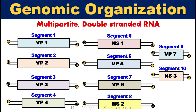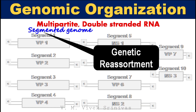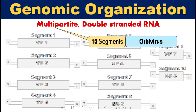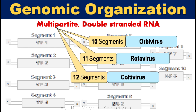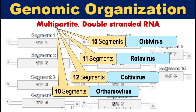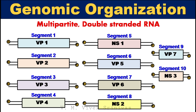Genomic organization. The genome is multipartite, that is segmented and double-stranded RNA. This segmented genome may result in genetic reassortment. The Orbivirus possesses 10 segments, Rotavirus possesses 11 segments, Coltivirus 12 segments, and Orthoreovirus 10 segments. Our interest here is on Orbivirus, which possesses 10 segments. Each segment codes for 1 or 2 proteins.